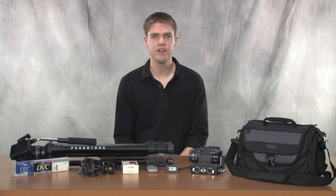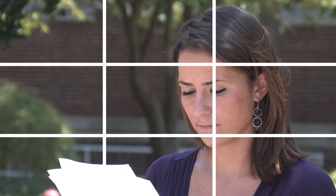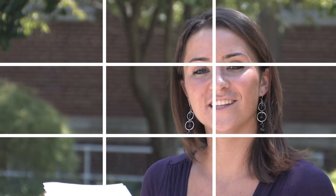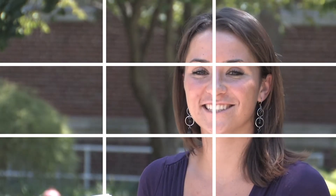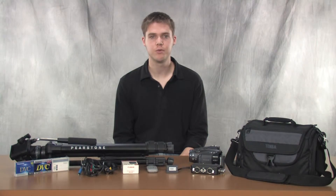The rule of thirds is applied when you place an imaginary tic-tac-toe board over the entire frame and align the subject on one of the points where the vertical and horizontal lines intersect. Using this rule creates more compositional interest.